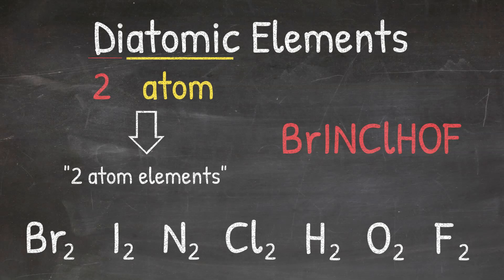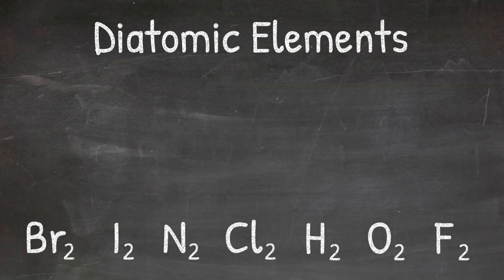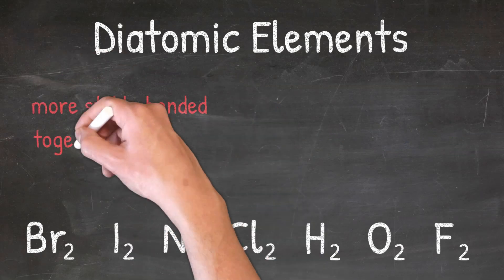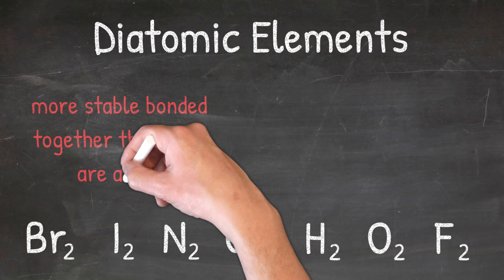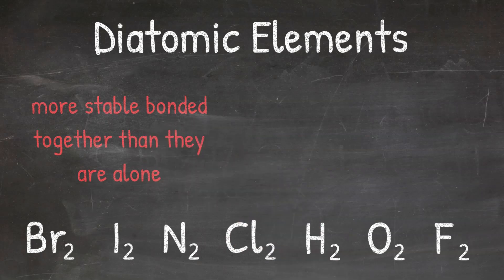The reason that these seven elements exist as diatomic elements is because they are more stable bonded together than they are alone. Remember that element stability goes back to the number of valence electrons an element has and how it satisfies the octet rule. If you need a refresher on element stability, check out our video.